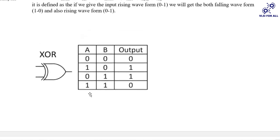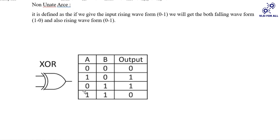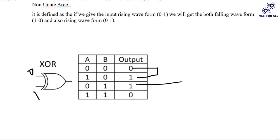Non-unate arc. Here B is 0, A is 0, output is 0. Change A to 1: inputs 1, 0 — output becomes 1. Then B changes to 1 and A goes back to 0: inputs 0, 1 — output is 1. Change A to 1: inputs 1, 1 — output becomes 0. So here the output can go both 0 to 1 and 1 to 0, depending on the input state. That is non-unate.